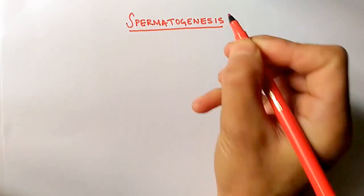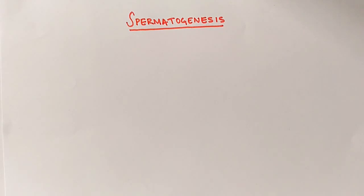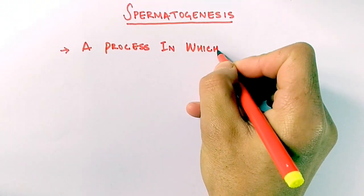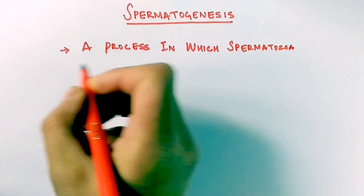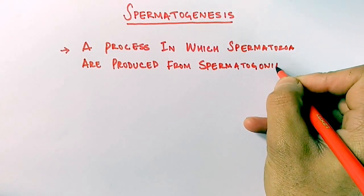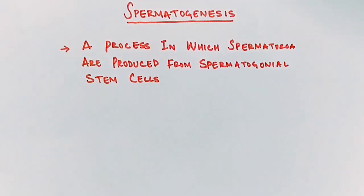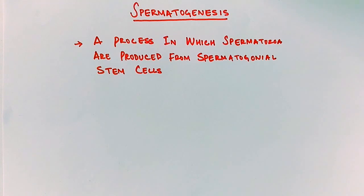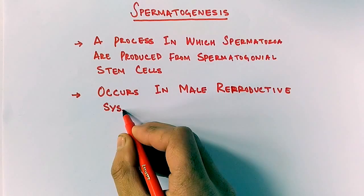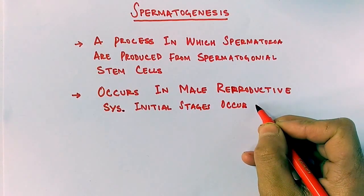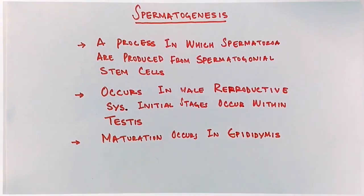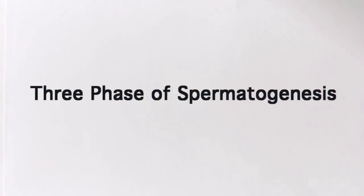Hi friends, today we'll be discussing spermatogenesis — how sperm is formed in our body. Spermatozoa are produced through this process from cells called SSCs, or spermatogonial stem cells, which are able to differentiate into different kinds of cells, ultimately giving rise to spermatozoa. This process occurs in the male reproductive system: initial stages occur within the testes, and the maturation stage occurs in the epididymis.